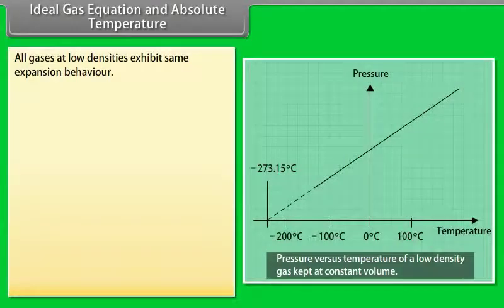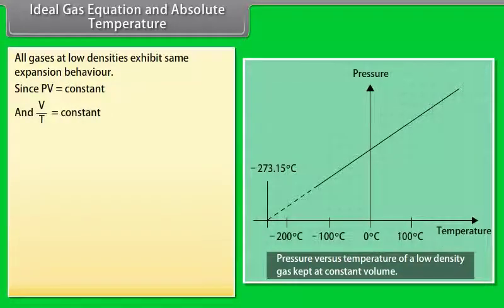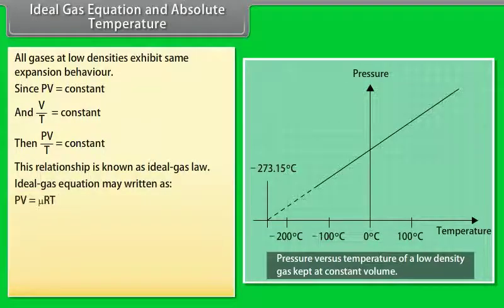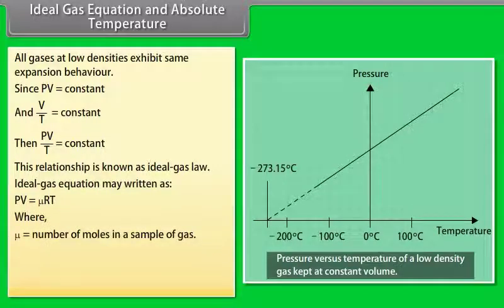All gases at low densities exhibit the same expansion behavior. Since PV = constant and V/T = constant, then PV/T is also constant. This relationship is known as the ideal gas law. The ideal gas equation may be written as PV = μRT, where μ is the number of moles in a sample of gas and R is the universal gas constant.